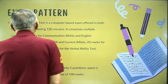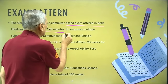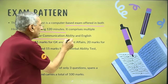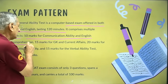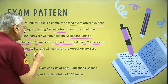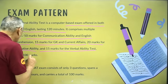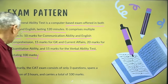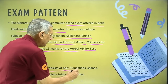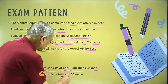Regarding exam pattern: the General Ability Test is a computer-based exam offered in both Hindi and English, lasting 120 minutes. It comprises 50 marks for communication ability and English comprehension, 15 marks for GK and current affairs, 20 marks for quantitative ability, and 15 marks for verbal ability, totaling 100 marks. The CAT examination consists of only three questions worth 10 marks each, spans three hours, and carries a total of 100 marks.